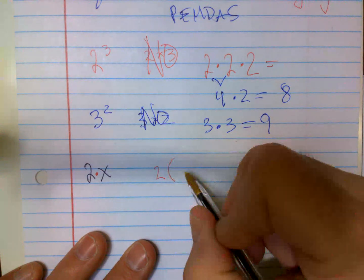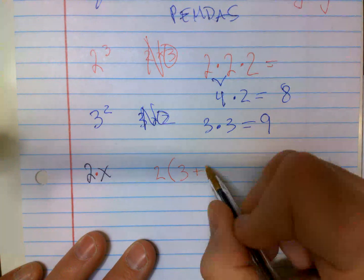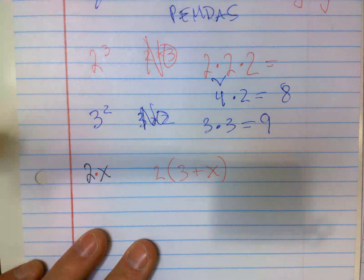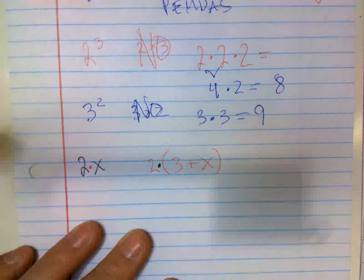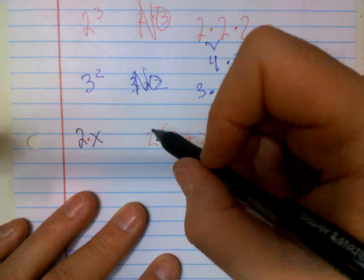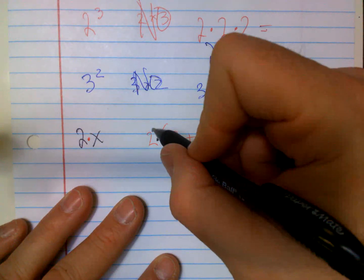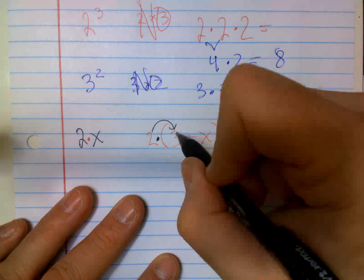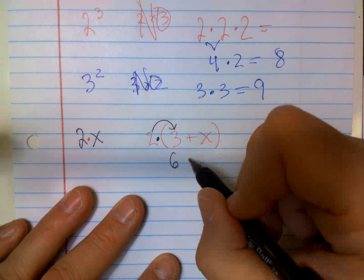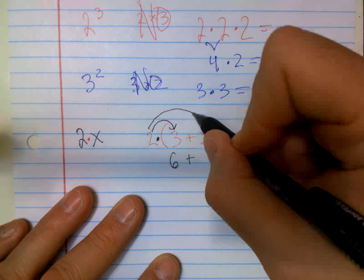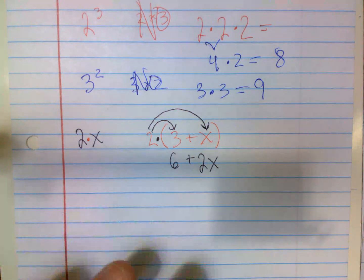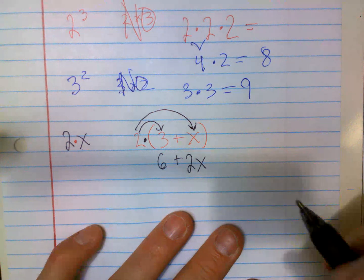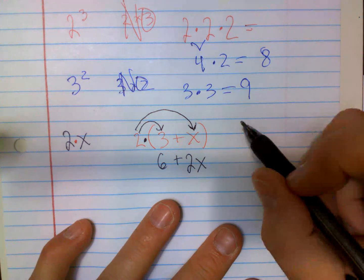Same thing when you have parentheses. Distributive property means two times everything on the inside. A lot of schools call it the rainbow method, but you're going to do 2 times everything in here. 2 times 3 is 6, we're still going to have the plus sign drop down, and then 2 times X is just 2X. So this isn't too difficult. Most people do pretty good with this stuff.